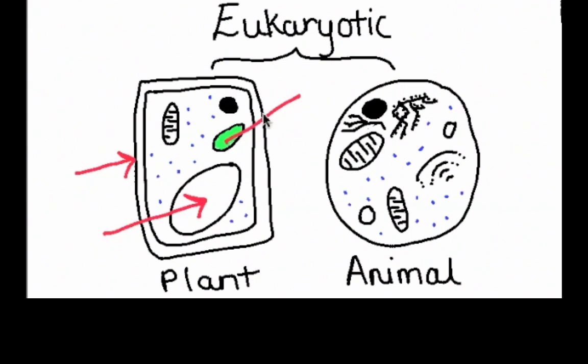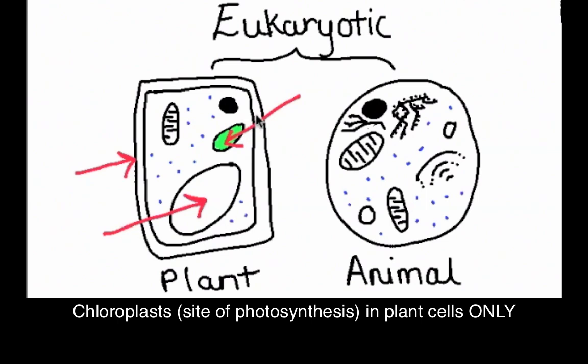The third one comes right here where your plant cell has a chloroplast, which is the site of photosynthesis for the plant cell. An animal cell does not contain chloroplasts.